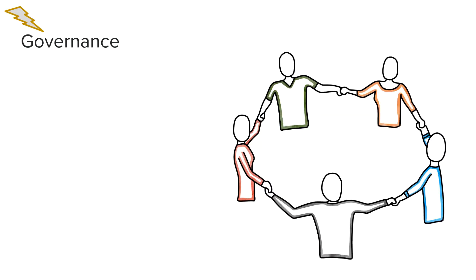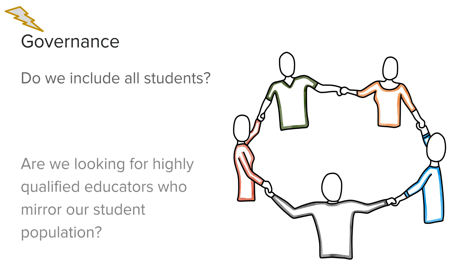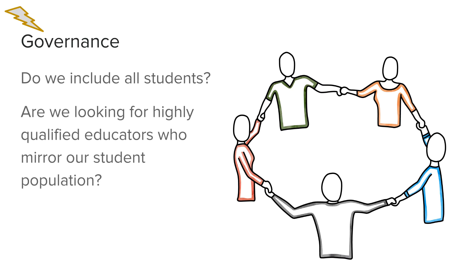In the governance standard, schools ask themselves how they are including all students equitably in the education process. How do schools strive to find qualified educators who mirror their student population?